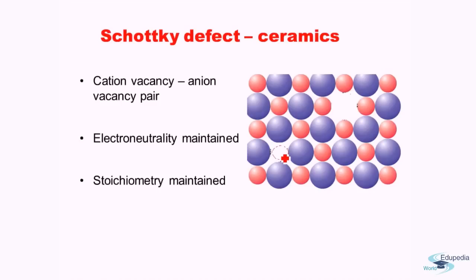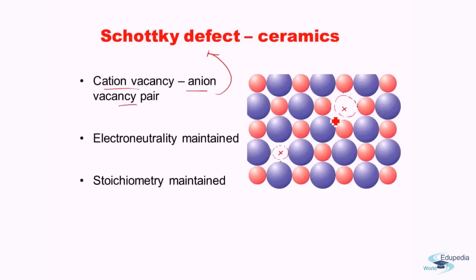Next, let us see the Schottky defect. The Schottky defect is a cation vacancy and anion vacancy pair. We have a cation missing from the specimen — and to counteract the charge loss, an anion is also missing. So a Schottky defect is a cation vacancy–anion vacancy pair. Electrical neutrality is maintained because both are missing, and stoichiometry is maintained because cations and anions are missing in the same ratio as their stoichiometric composition.